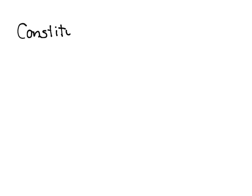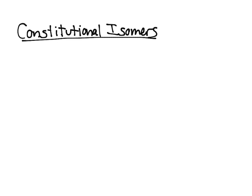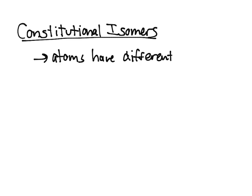In this video, I'm going to talk about the different kinds of isomers and how they relate to one another. First, we'll start off with constitutional isomers. Constitutional isomers are essentially molecules that differ — they have their atoms connected differently.